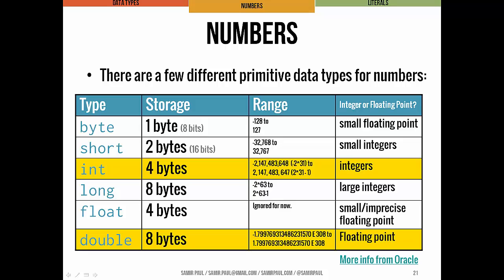There are a few different types of primitive data types that we use for numbers. The highlighted ones are the ones we're going to focus on in this course. They range from small to pretty large and have a bunch of different uses: byte, short, int, long, float, and double. You can see how many bytes they take up — a byte is just eight bits all in a line. So a one-byte variable takes up eight bits, two bytes means 16 bits, 16 zeros and ones. We can see their potential ranges and what kind of numbers they actually hold.